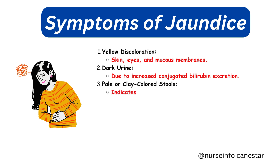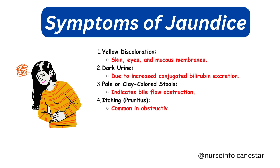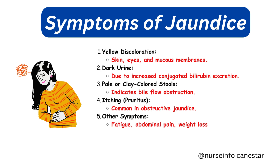Dark urine is caused by the presence of conjugated bilirubin in the urine. Pale or clay-colored stools indicate a lack of bilirubin in the digestive tract, often due to bile flow obstruction. Itching (pruritus) is a common symptom of obstructive jaundice, caused by bile salt accumulation in the skin.